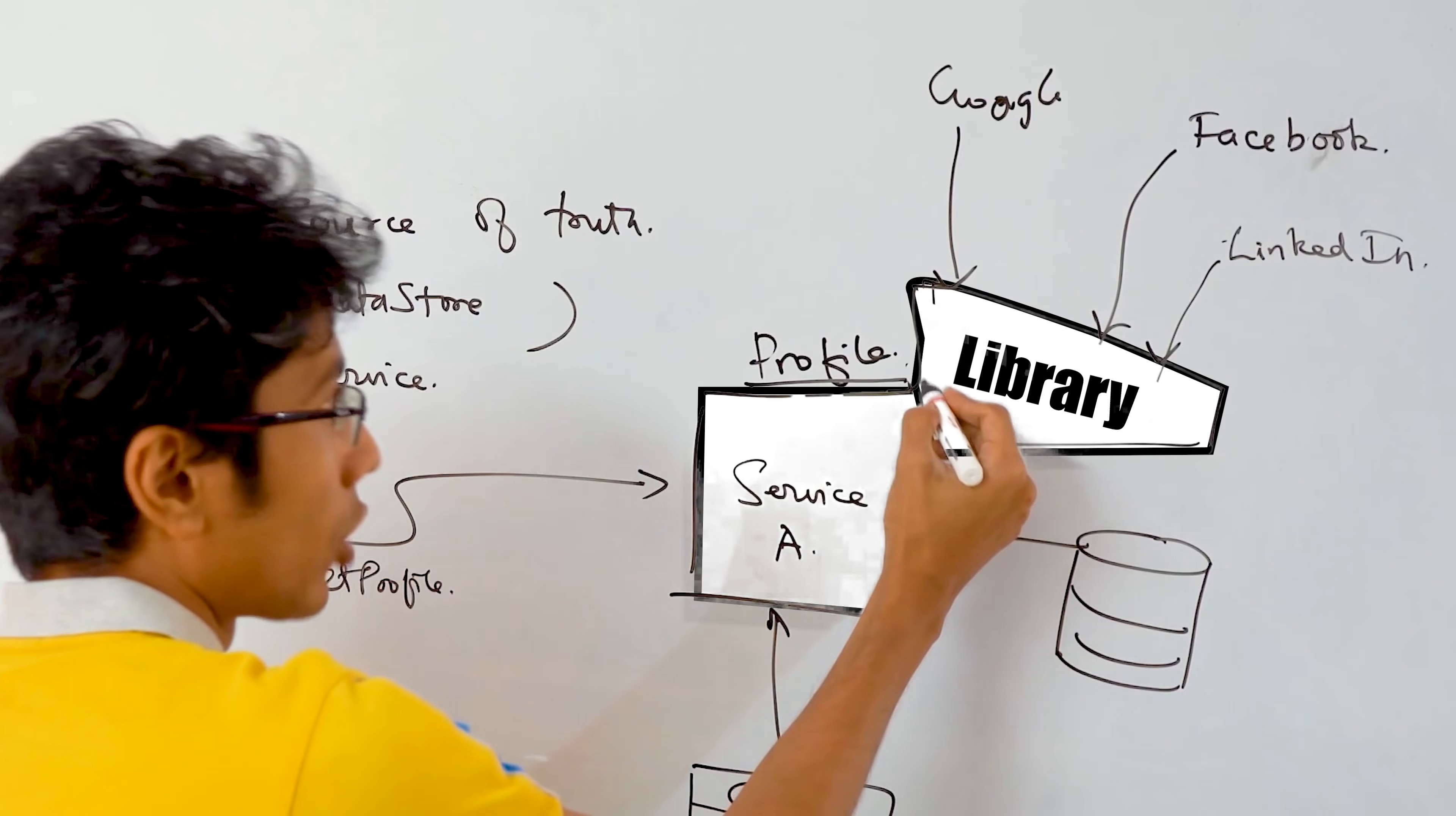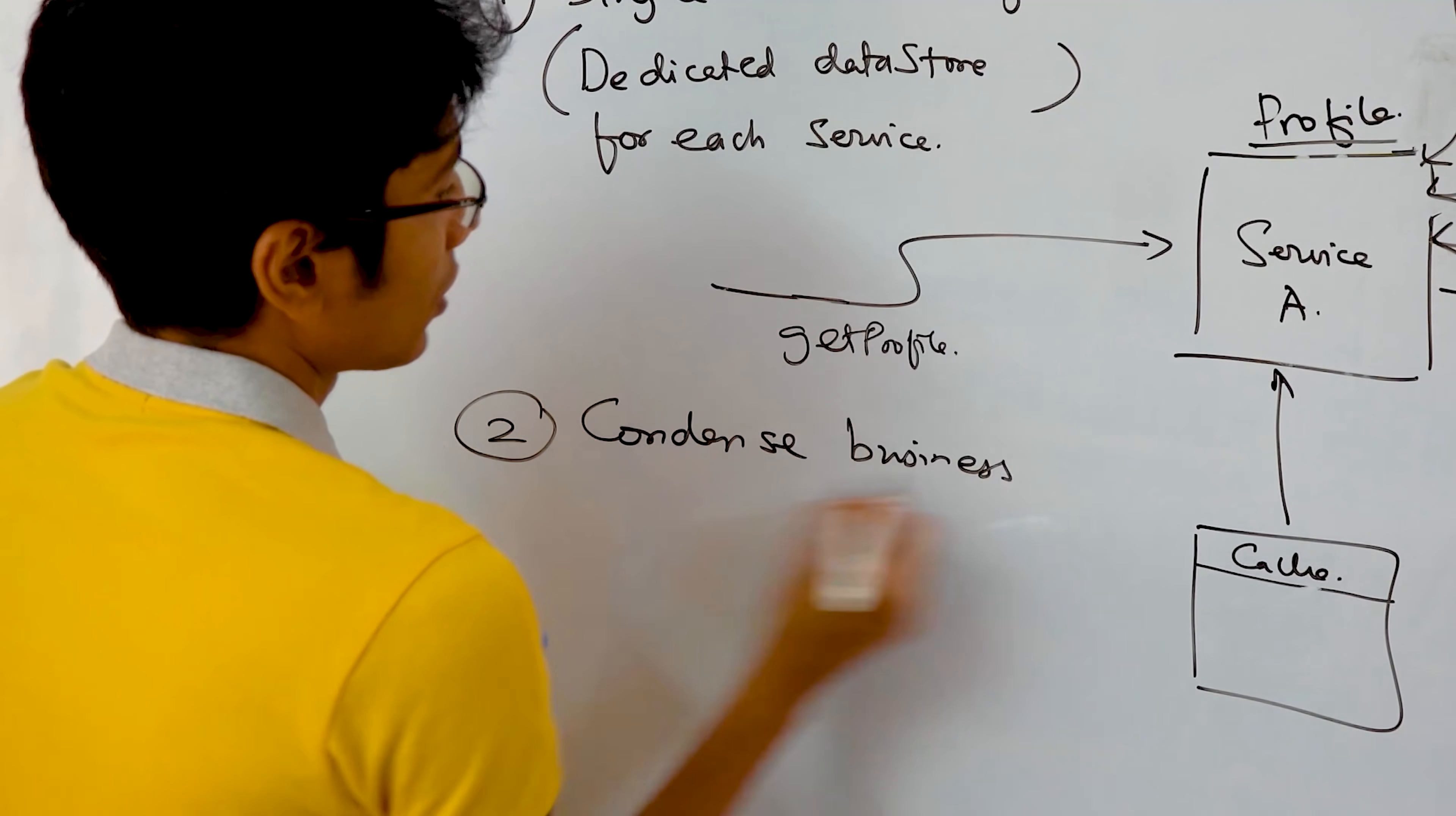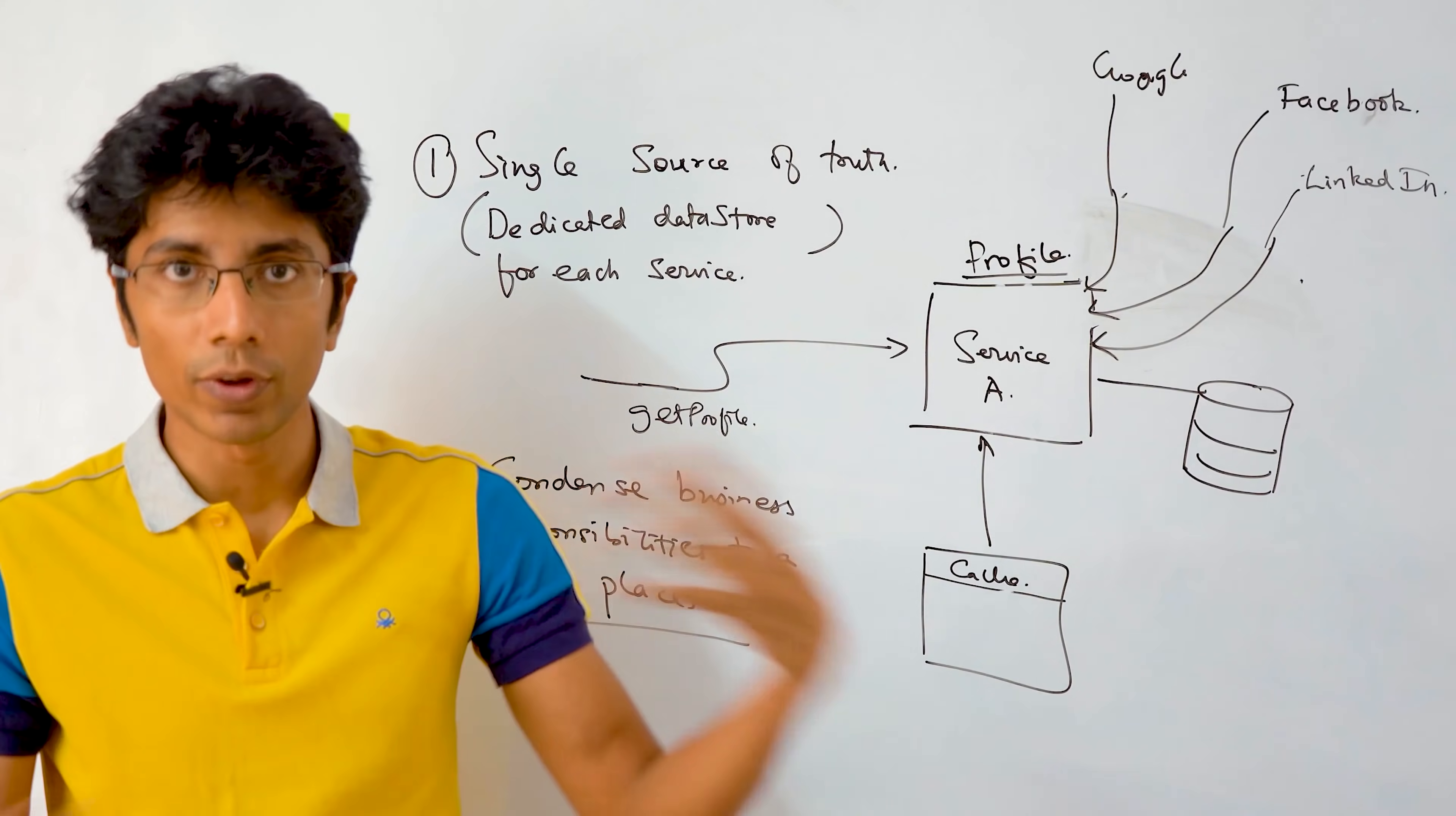It shouldn't be separate from this service though. The code base should not be separate. So that's the reason why this should just be a part of profiles. So that's the second point. Condense business responsibilities to a single place. Don't break it down just because your engineering will get much simpler. Really do consider whether you need to separate it further and further.